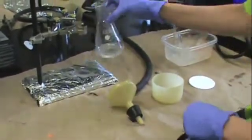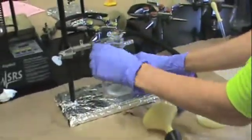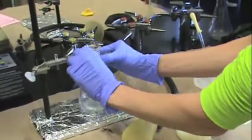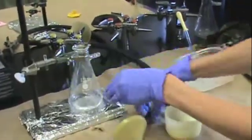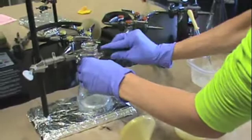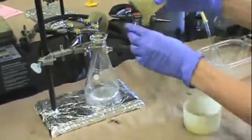Attach the sidearm flask to a clamp that you have prepared on your ring stand. Make sure to clamp it tightly. Then attach the hose connected to the vacuum line.